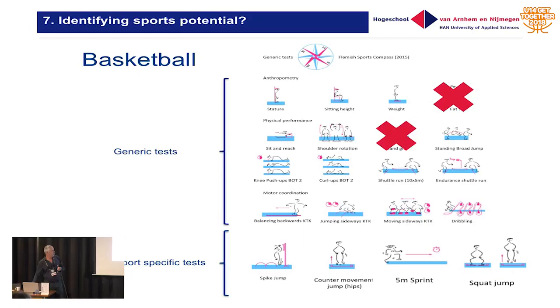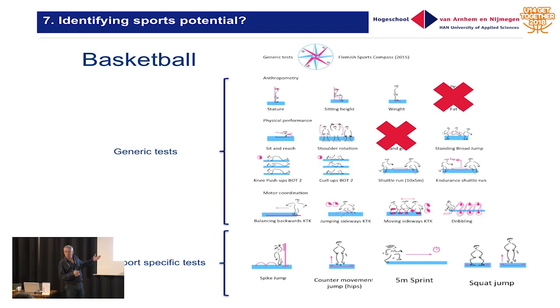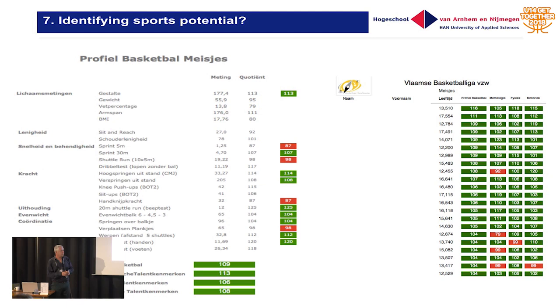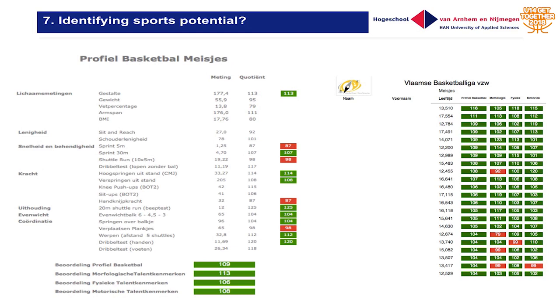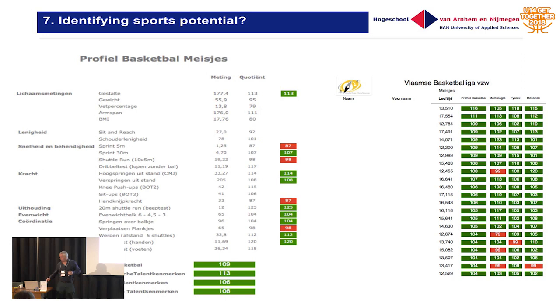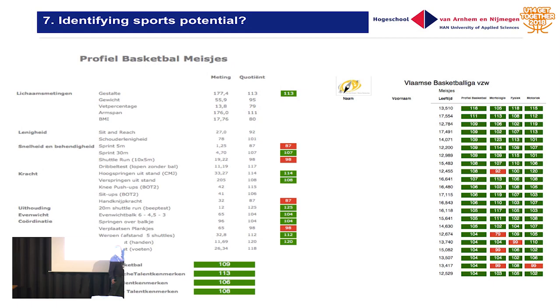How are we going to apply this in basketball? From our generic test battery, we remove what's not needed and add sport-specific tests, building a complete profile for basketball. This is what we did in elite sports schools. One example girl's puzzle is largely green with some weak points to work on — and that girl plays in the national team. The ranking of all girls shows: the higher you go, the more green; further down, more and more red. This is how you build success.